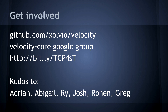If you want to get involved, the best thing you can do is try it out and report bugs — tell us what features you want, what's missing. There's a lot of stuff still to come. If you'd like to get involved with the team, there is a Velocity Core Google Group. The bit.ly link shown is the slides from this deck. And a special thanks to our team members who aren't here: Adrian, Abigail, Rai, Josh, Ronan, Greg — you guys are awesome.